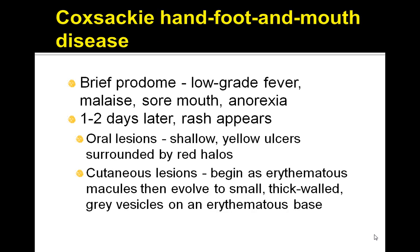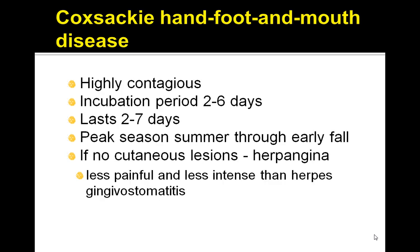Let's review Coxsackie hand, foot and mouth disease. This has a brief prodrome with low grade fever, malaise, sore mouth and anorexia. One to two days later a rash appears. There are also oral lesions that are shallow yellow ulcers surrounded by red halos, and cutaneous lesions that begin as erythematous macules then evolve to small thick-walled gray vesicles on an erythematous base. It's highly contagious and the incubation period is 2-6 days. It lasts for 2-7 days.